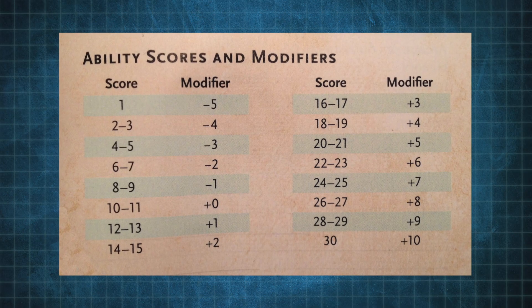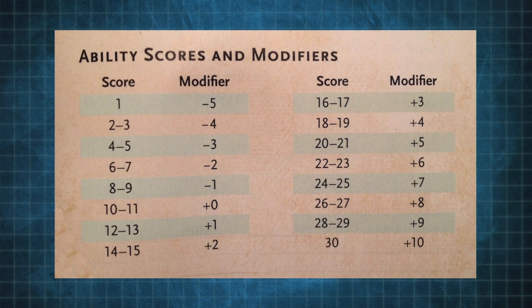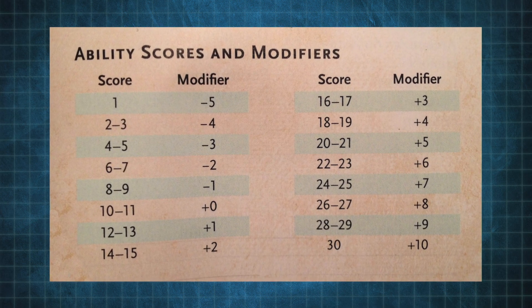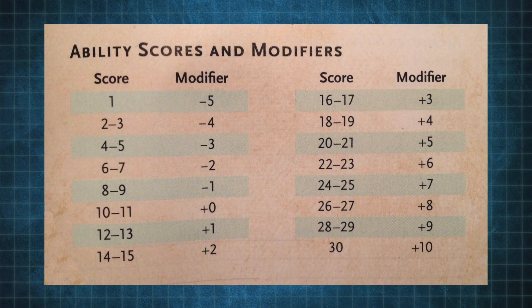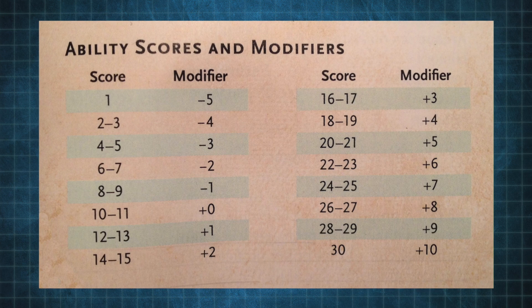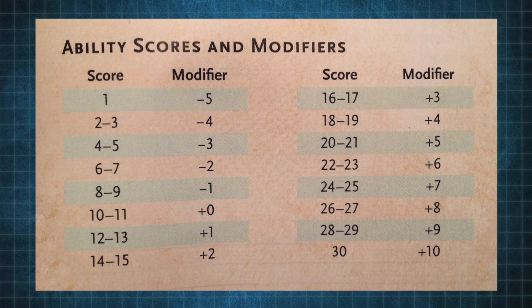Now 6 is not a great number. Obviously he's going to have a minus 2 to attacks, a minus 2 to damage, but what this number doesn't consider is that a halfling has excellent relative strength.